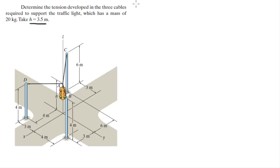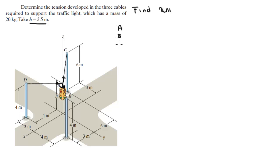The first thing you need to do is find the unit vectors. There are four unit vectors: the one going towards C, towards D, towards B, and the one going straight down. To find these unit vectors you need to find all the points involved: points A, B, C, and D.